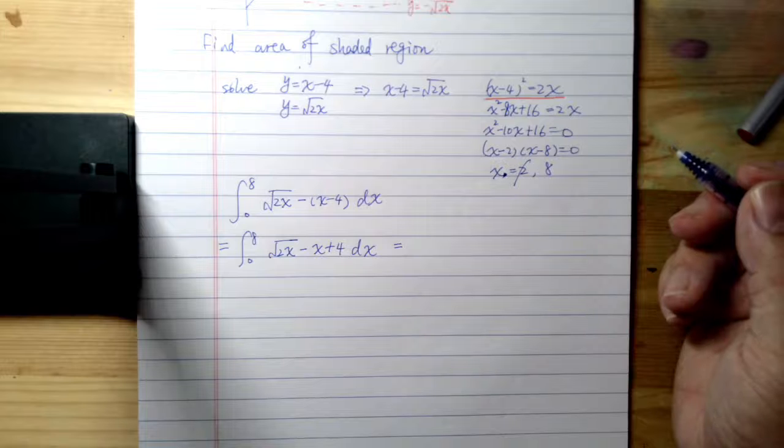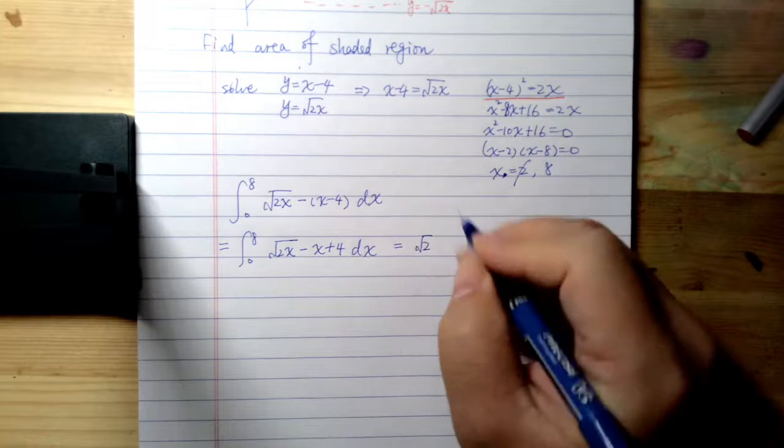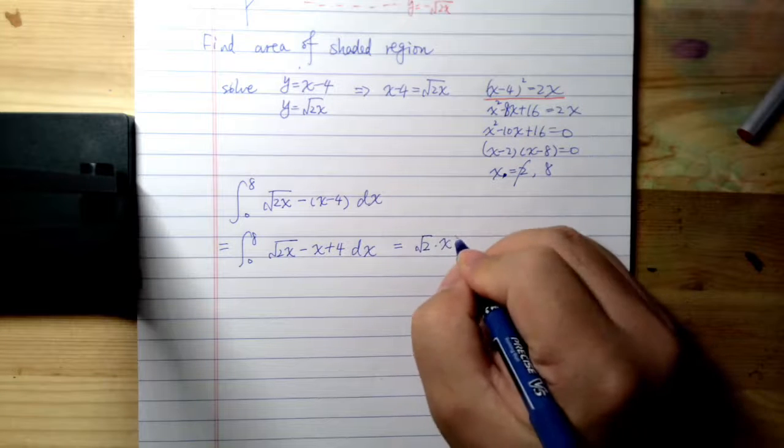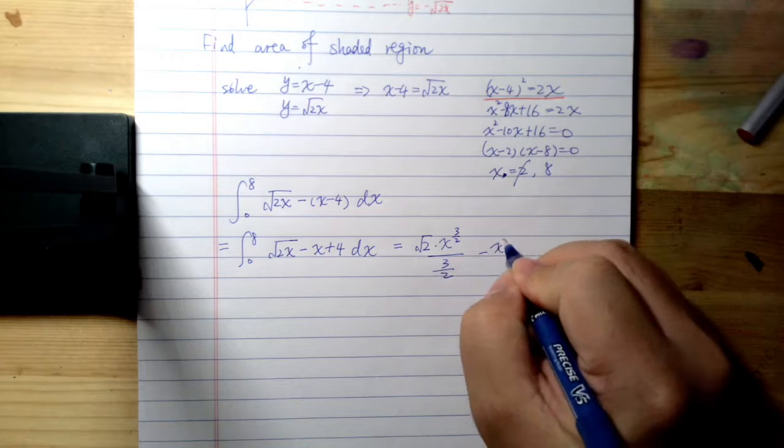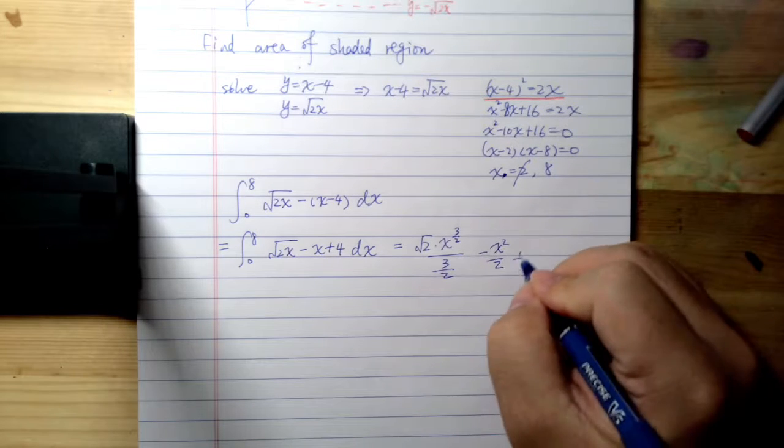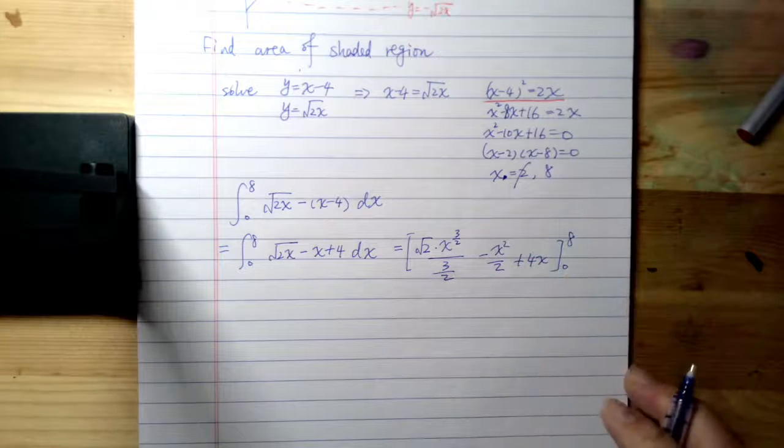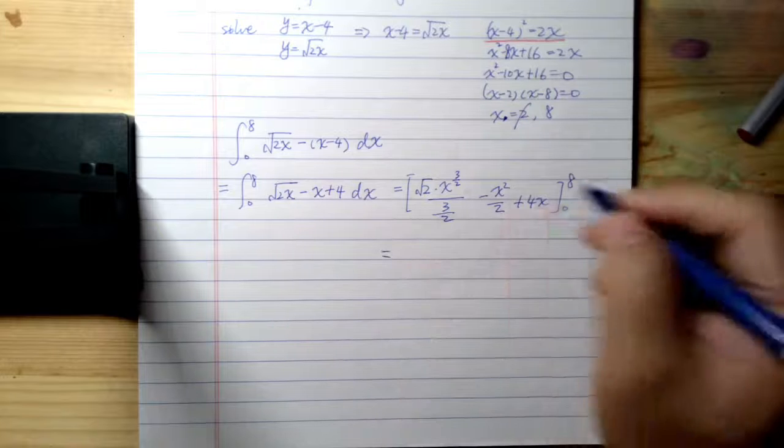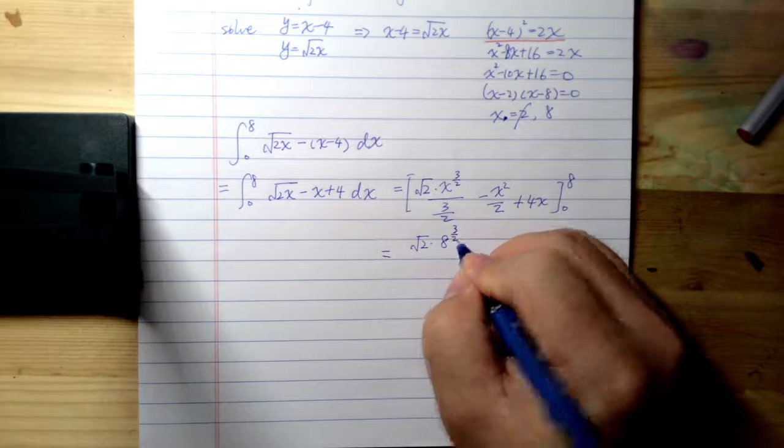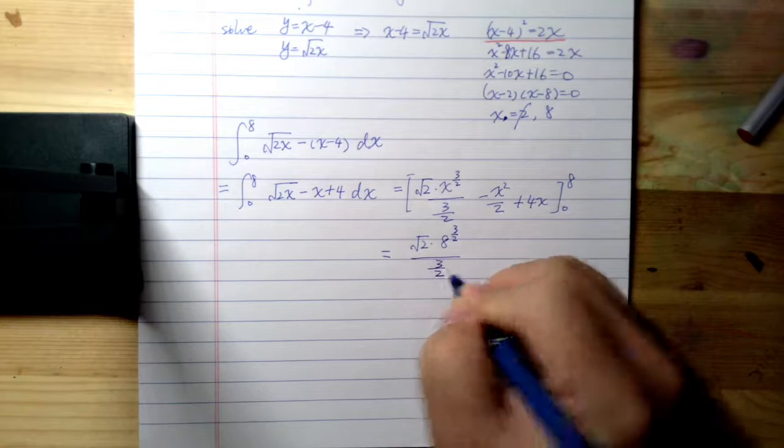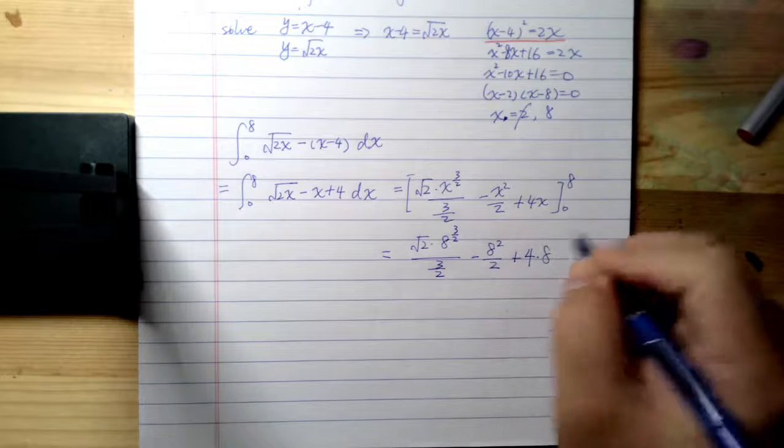So the last part is just some purely algebra. It's the square root of 2 times x to the power of 3/2 over 3/2 minus x squared over 2 plus 4x, and then from 0 to 8. All we need to do is just to plug 8 in. So it's the square root of 2 times 8 to the power of 3/2 over 3/2 minus square root of 2 times 4 times 8.